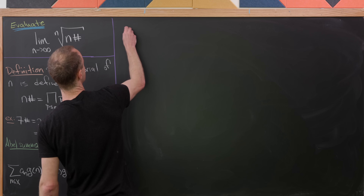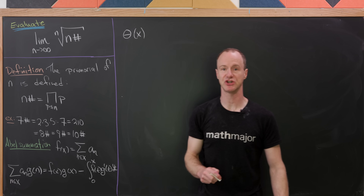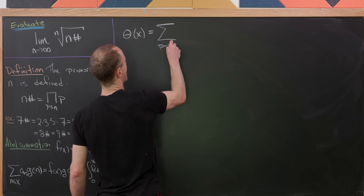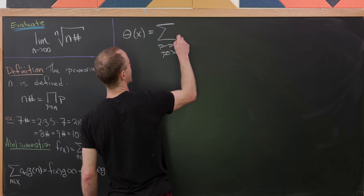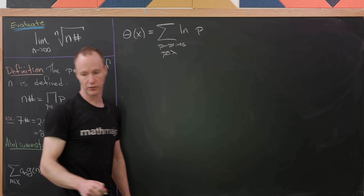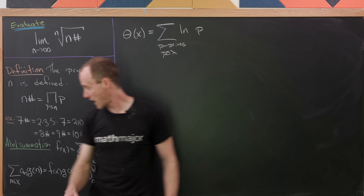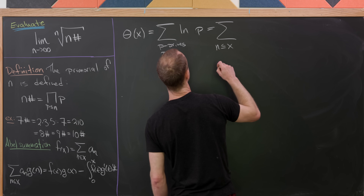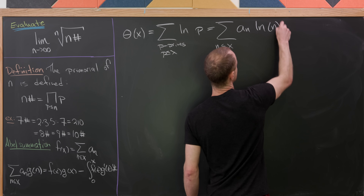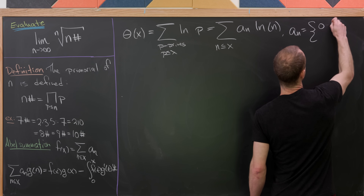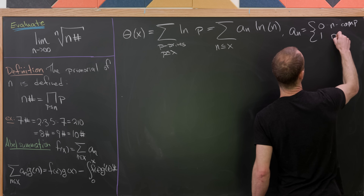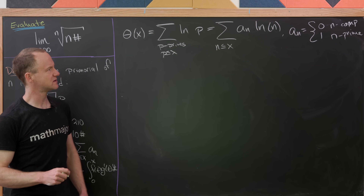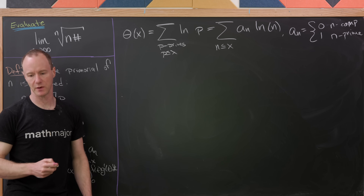Now I'm going to define a new function known as one of the Chebyshev functions, generally denoted by θ(x). This is equal to the sum over all primes less than or equal to x of the natural log of those primes. I'm going to rewrite this so we can use the Abel summation formula: it's the sum over all n less than or equal to x of a_n times the natural log of n, where a_n equals 0 if n is composite and a_n equals 1 if n is prime. This clearly collapses into the sum we were starting with.